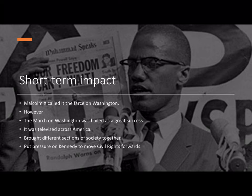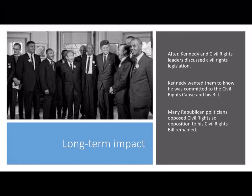Although there were some detractors — for example, Malcolm X called it 'the farce on Washington' — the March on Washington was held as a great success. It was televised across the USA and did much for the civil rights movement. It brought together different sections of US society and put further pressure on Kennedy to move forwards on civil rights. After the march, King and the other leaders met President Kennedy to discuss the civil rights legislation. Kennedy was keen to let them know he was committed to the civil rights calls and his bill. However, they were aware that many Republican Party politicians still opposed any changes to civil rights, and no opposition politician in the Senate changed his mind about Kennedy's civil rights bill.